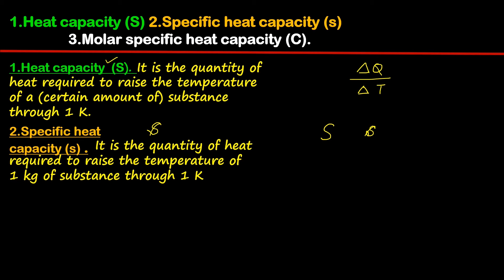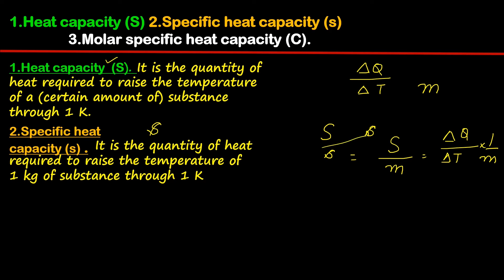What is the relation between heat capacity capital S and specific heat capacity small s? Heat capacity S is for the given mass M. Then specific heat capacity small s equals heat capacity capital S divided by mass M, or delta Q divided by delta T multiplied by 1 by M. This M is in the denominator because we must consider only one kilogram.